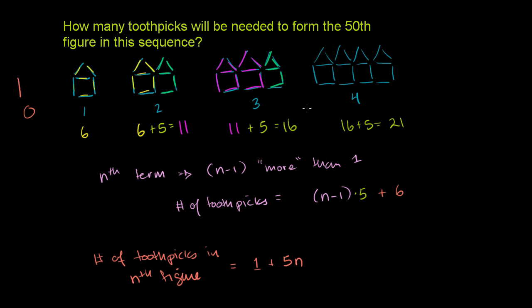Now let's answer their question. We need to figure out the toothpicks in the 50th figure in the sequence. Well, we just put 50 for n here. So for the 50th figure, we could use either formula. We have 1 plus 5 times 50. 5 times 50 is 250, plus 1 is equal to 251.